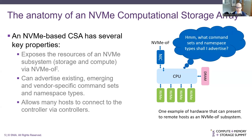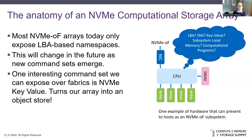So a question we get to ask is: what command sets and namespaces shall I advertise? In theory, we don't even have to back those up with real resources — I can advertise anything I like. Now when the hosts try to use it, it should really be there. Most NVMe over Fabrics arrays today only expose LBA-based namespaces, whether it's classical LBA or ZNS. I think this will definitely change in the future as new command sets emerge.